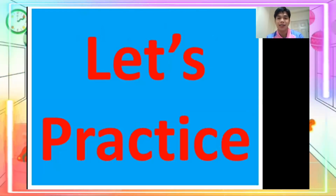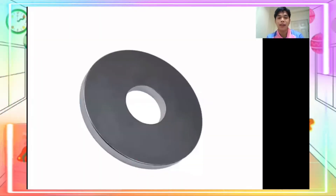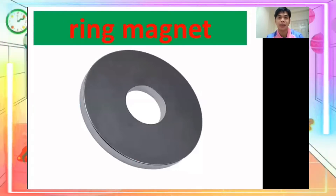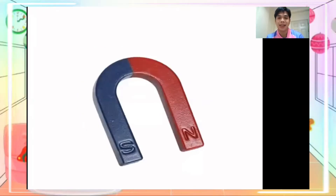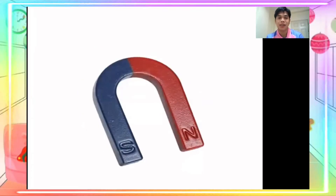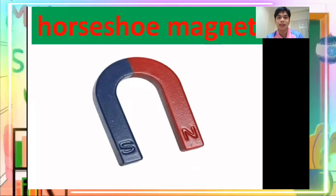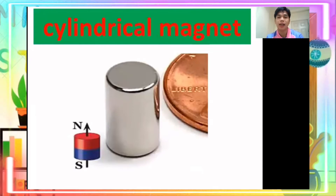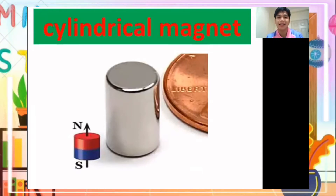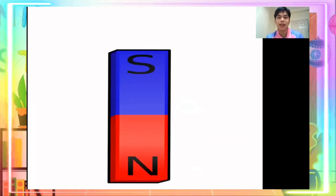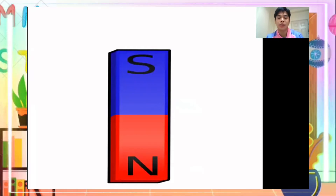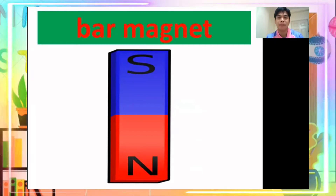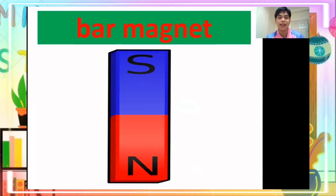Now let's practice! What magnet is it? It's a ring magnet. What magnet is it? It's a cylindrical magnet. What pole is it? This one is a bar magnet.